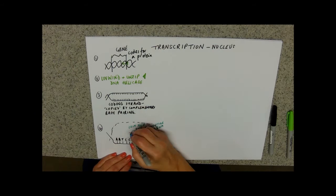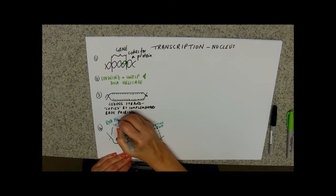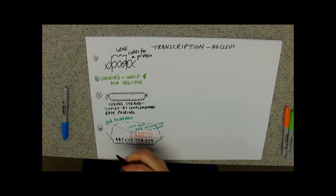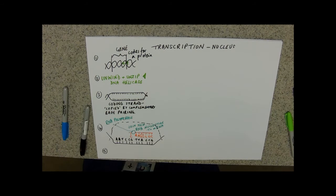What we've made here will be a nice complementary copy. So, name of that enzyme, RNA polymerase. Our final bit of this sequence is that we have now made our messenger RNA.